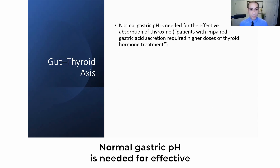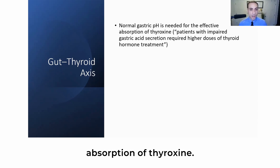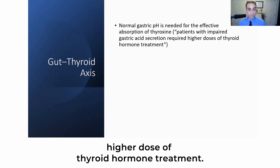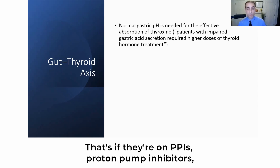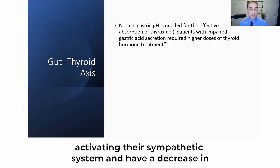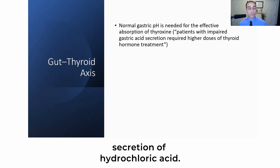Normal gastric pH is needed for effective absorption of thyroxine, so patients with impaired gastric acid secretion require higher doses of thyroid hormone treatment. This applies to patients on PPIs — proton pump inhibitors — or those taking antacids, or who are stressed and activating their sympathetic system, leading to decreased secretion of hydrochloric acid.